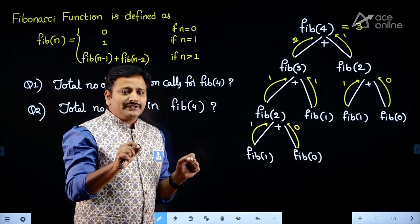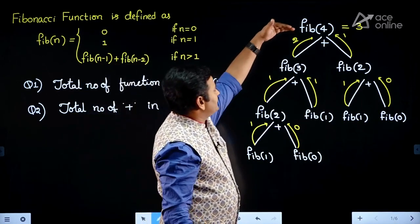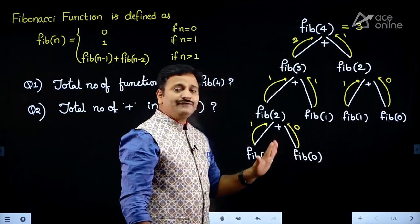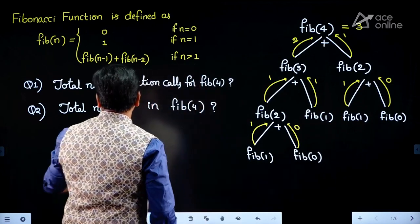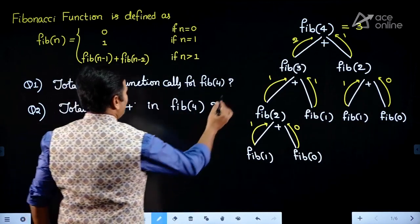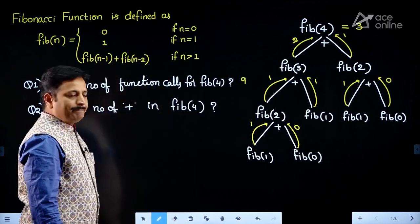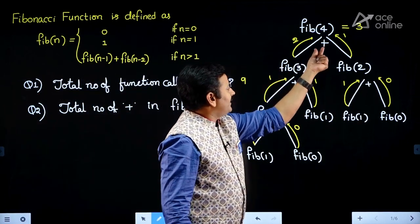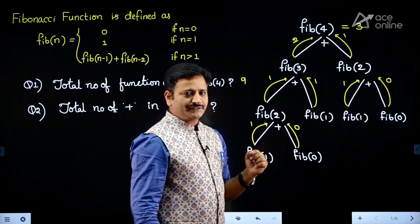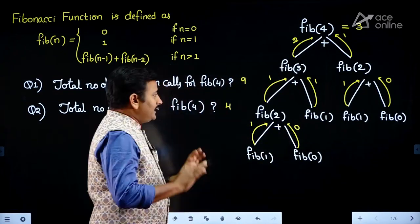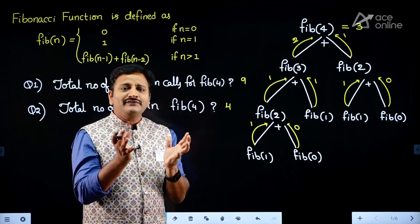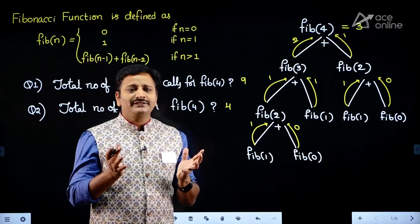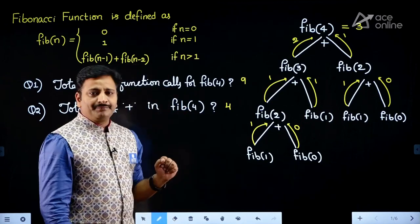How many function calls are there for computing Fib(4)? Just count: 1, 2, 3, 4, 5, 6, 7, 8, 9 — there are 9 function calls. So the answer to the first question is that there are 9 function calls for computing Fib(4). How many plus operations are there? There are 1, 2, 3, 4 plus operations. We computed these manually by drawing the recursion tree. But from an exam point of view, we may not have enough time to draw the recursion tree if the input value is large.